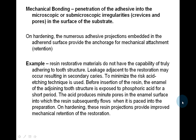For example, resin restorative materials do not have the capability of truly adhering to tooth structure, so leakage adjacent to the restoration may occur, resulting in secondary caries. To minimize this risk, the acid etching technique is used. Before insertion of the resin, the enamel of the adjoining tooth structure is exposed to phosphoric acid for a short period. The acid produces minute pores in the enamel surface into which resin subsequently flows when placed into the preparation. On hardening, these resin projections provide improved mechanical retention of the restoration.